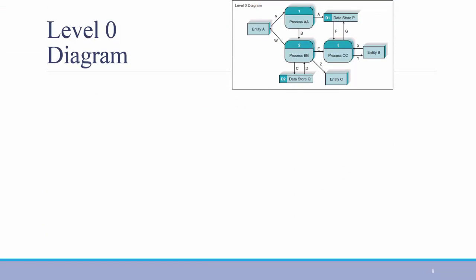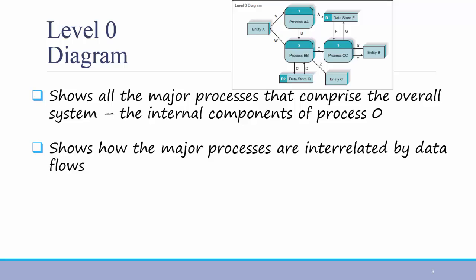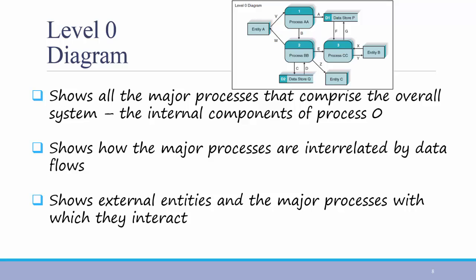You also always have a level 0 diagram. Again, the level 0 diagram shows all the major processes that comprise the overall system, the internal components of process 0. You show how they're interrelated to each other and with data flows. You also still show these same external entities and the major processes with which they interact. And you now add stored data via data stores.